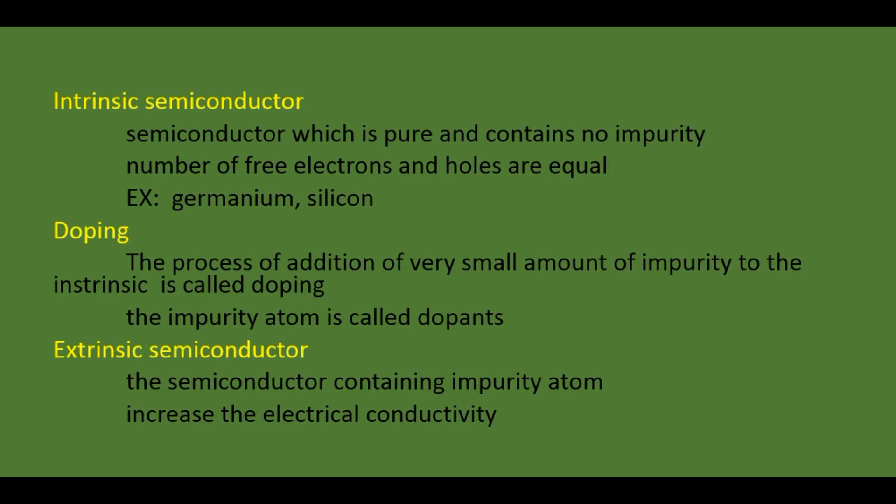The next concept is doping. Doping means the process of addition of a very small amount of impurity to the intrinsic semiconductor. We add a very small amount of impurity atom to the pure semiconductor — that process is called doping. The impurity atom is called the dopant, and the atom that accepts the impurity atom is called the acceptor.